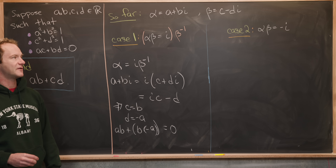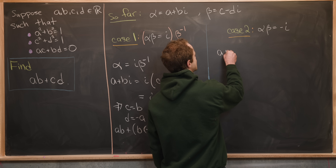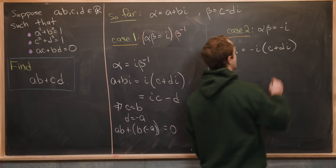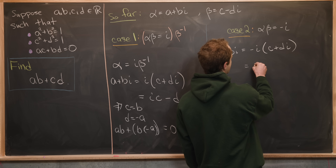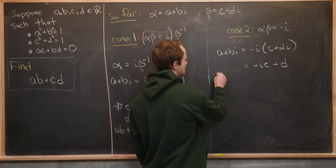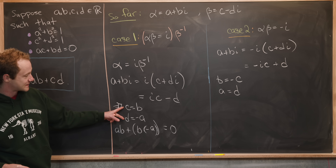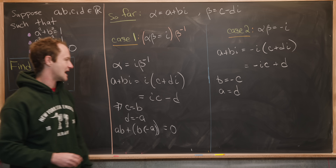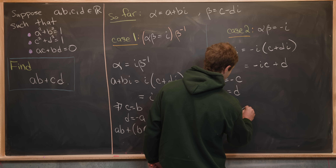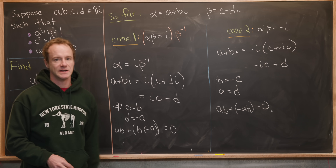Now for the second case, alpha times beta equals minus i. We approach it the same way — multiply by beta inverse to get a plus bi equals minus i times c plus di. Multiplying out gives negative ic plus d, so comparing real and imaginary parts, b equals negative c and a equals d. That gives ab plus cd equals ab plus negative ab, which is zero. So in either case, ab plus cd equals zero.